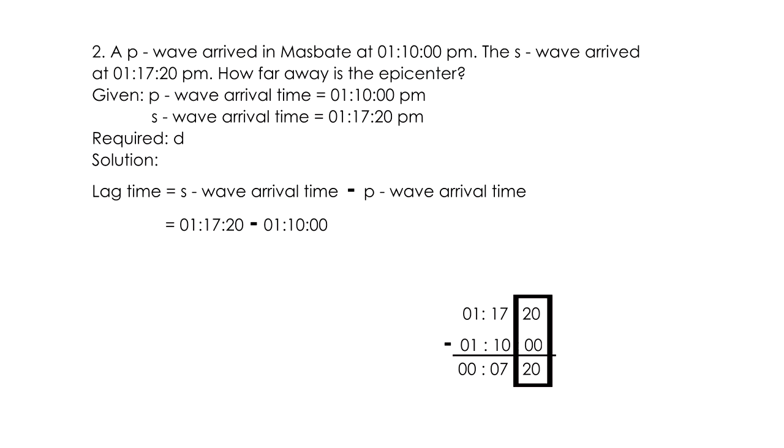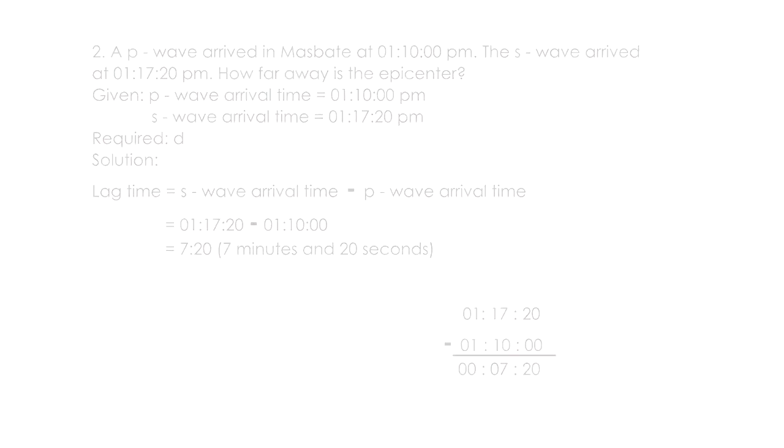For seconds: 0 minus 0 is 0, 2 minus 0 is 2. For minutes: 7 minus 0 is 7, 1 minus 1 is 0. For hours: 1 minus 1 is 0, 0 minus 0 is 0. So we get 7 minutes and 20 seconds.